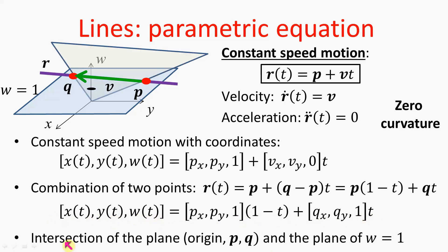Finally, we can give a third interpretation to the line using the external view of the ambient space. A line in Euclidean geometry is just the intersection of two planes in our three-dimensional ambient space: one plane is the geometry itself defined by W equals 1, and the other plane is defined by three points — the ambient origin, and the two points P and Q identifying the line. This interpretation is important because it is valid not only in Euclidean geometry, but also in spherical and hyperbolic geometries as well. For example, a line in hyperbolic geometry is just the intersection of the hyperboloid and the plane defined by two points in the geometry and the ambient origin.